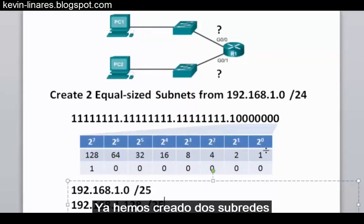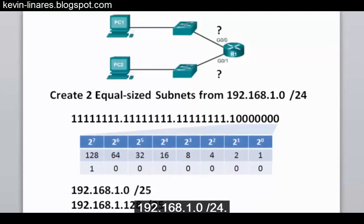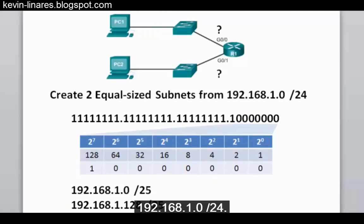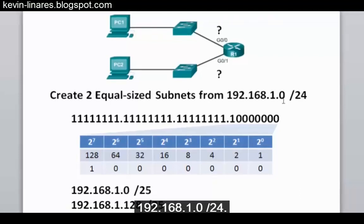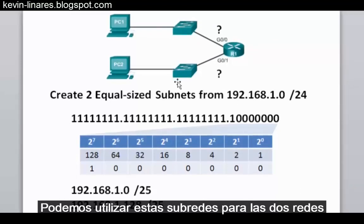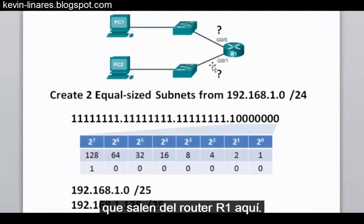We've now created 2 subnetworks from the original 192.168.1.0/24 network. We can use these subnets now for the two networks coming off of router R1 here.